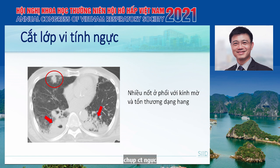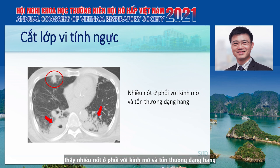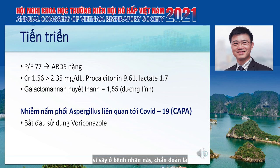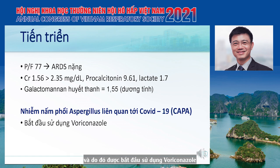The chest CT scan showed nodules with ground-glass opacity, and some areas of the lung had cavities. Serum galactomannan was sent and came back positive at 1.5. So in this patient, the diagnosis was COVID-19 associated pulmonary aspergillosis, or CAPA, and therefore voriconazole was started for treatment.